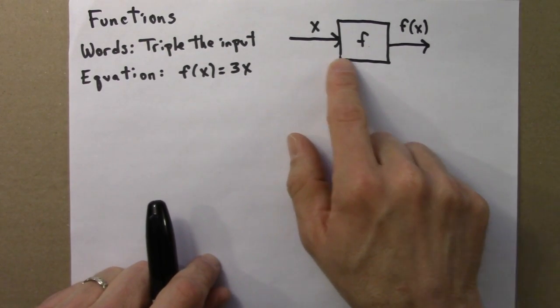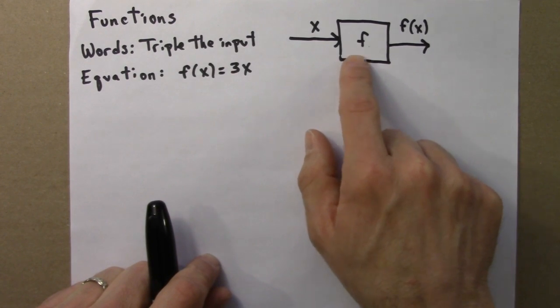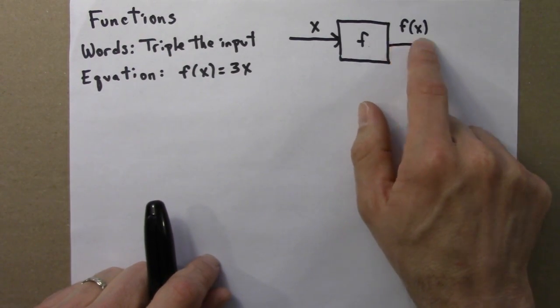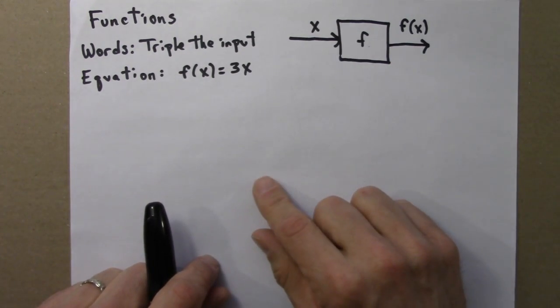It takes an input x, it does something to it—here's the box f that does something to x—and then we get an output, which we call f(x). So to go back to our original example,